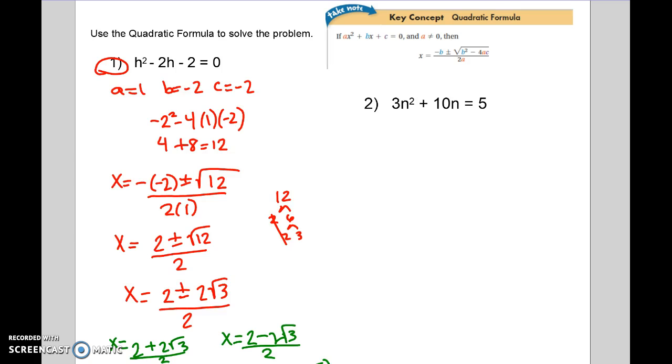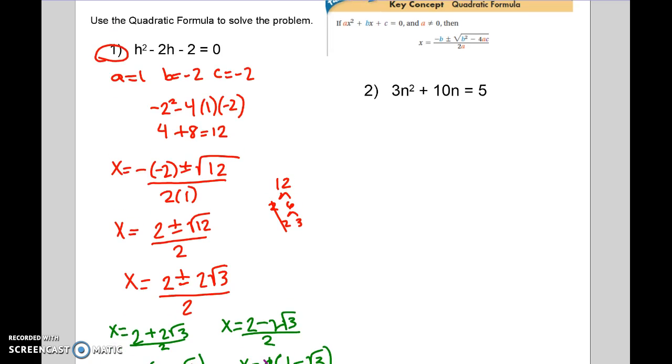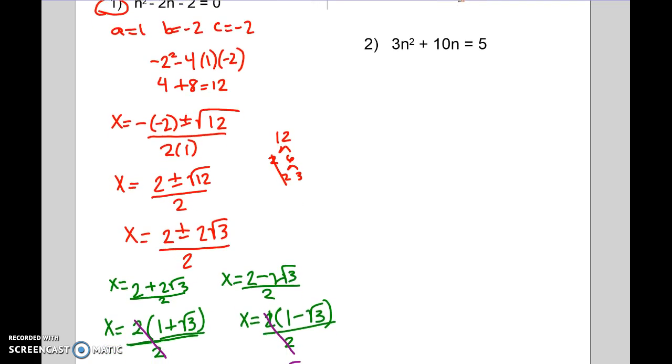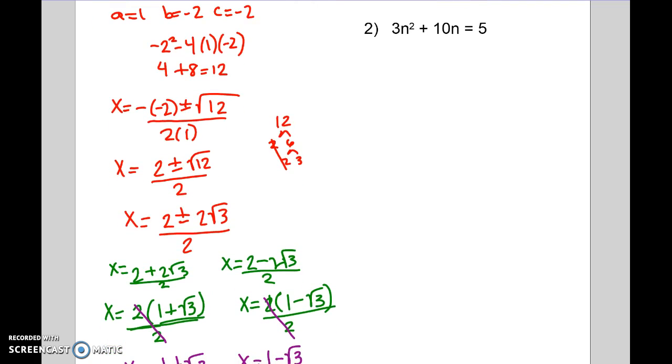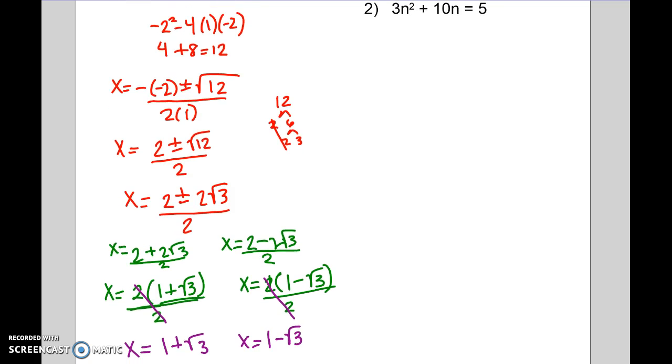So check your answer. And notice that as you go down to your two answers over here, you have 1 plus, 1 minus. They have a GCF, which you have to take out. And then you can reduce it with the bottom. So you're left with x equals 1 plus radical 3 and x equals 1 minus radical 3. Also notice back here you had a radical 12. You have to break that down. So whenever you have a radical that can be broken down, you need to make sure that you do that.